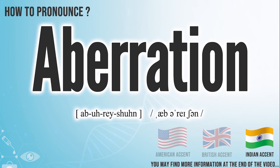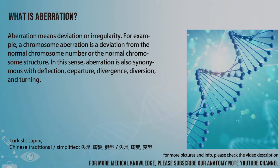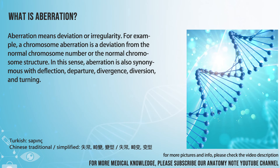Aberration. Aberration means deviation or irregularity. For example, a chromosome aberration is a deviation from the normal chromosome number or the normal chromosome structure.